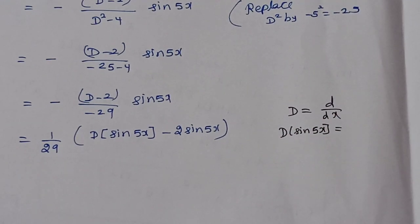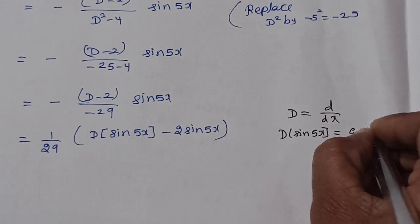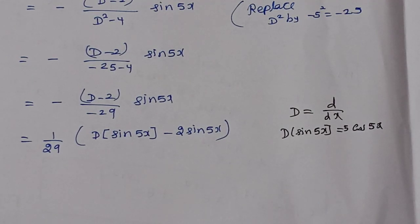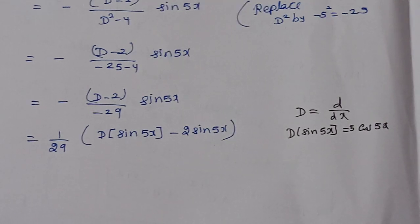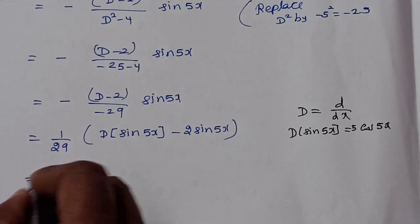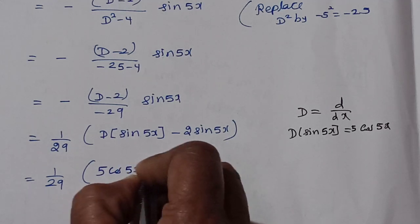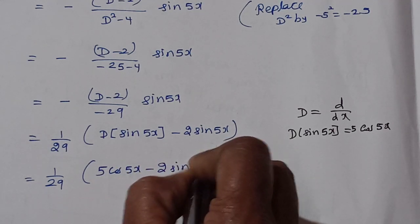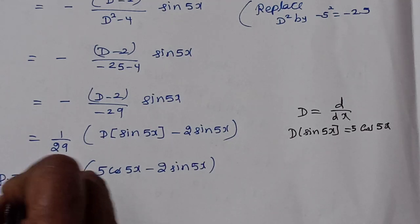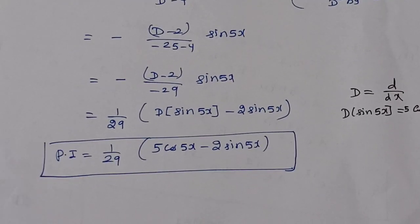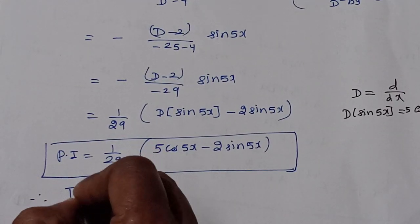Differentiating sin 5x gives 5 cos 5x. So the particular integral equals 1/29 times [5 cos 5x minus 2 sin 5x]. This is the particular integral, which has no arbitrary constants.